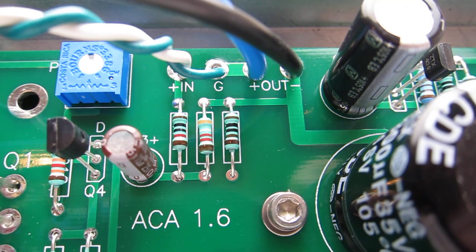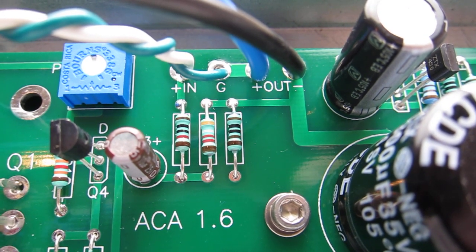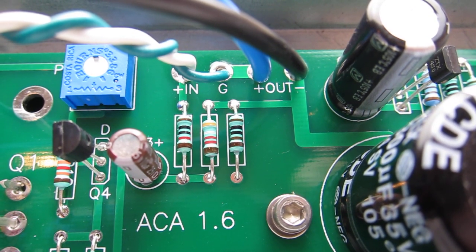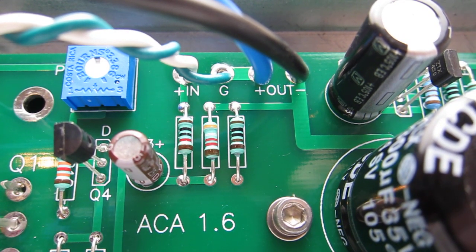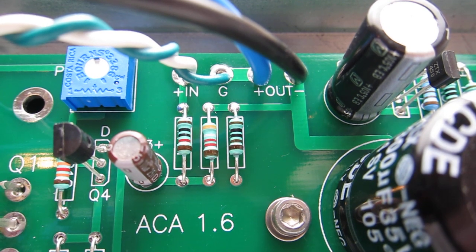Now you can see the speaker outputs. The blue goes to the red, which we have marked as positive. And we all secretly know that it's ground, but we have it marked as positive, so we're going to stick with positive to red. And we have the black going to the black speaker post.